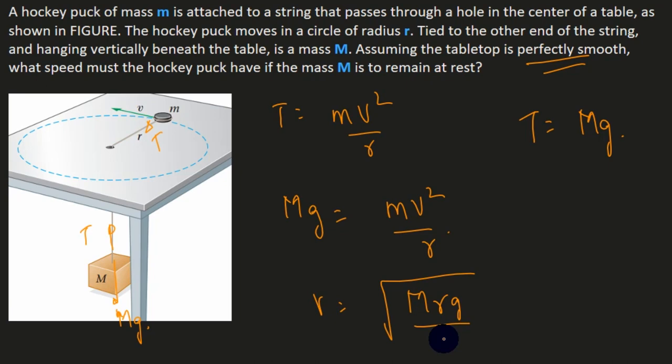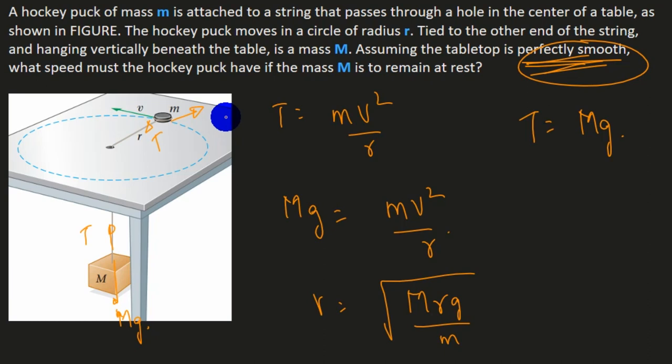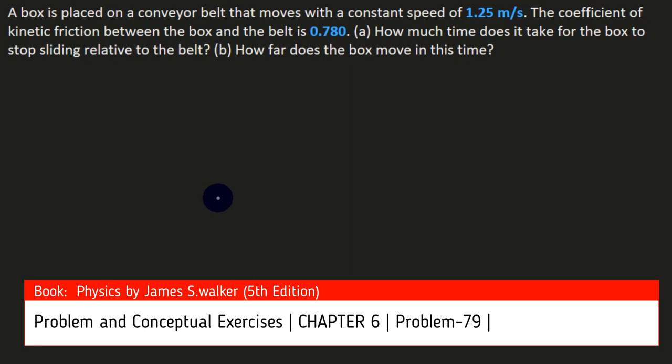This question could be made more interesting if the surface were not perfectly smooth. You can try it yourself: if the coefficient of kinetic friction is μ_k, what would the value of v be? Try it and comment below.